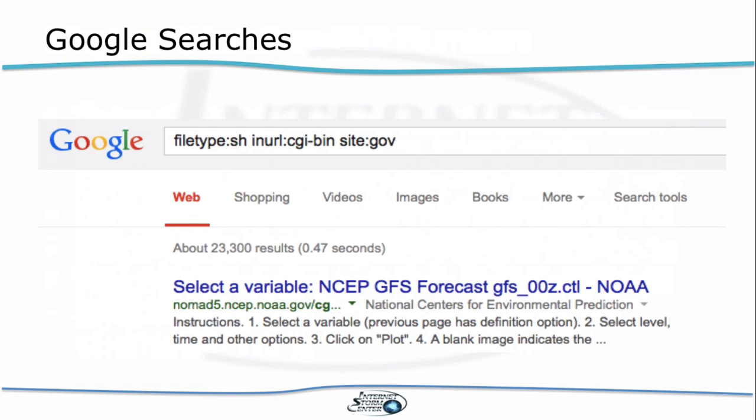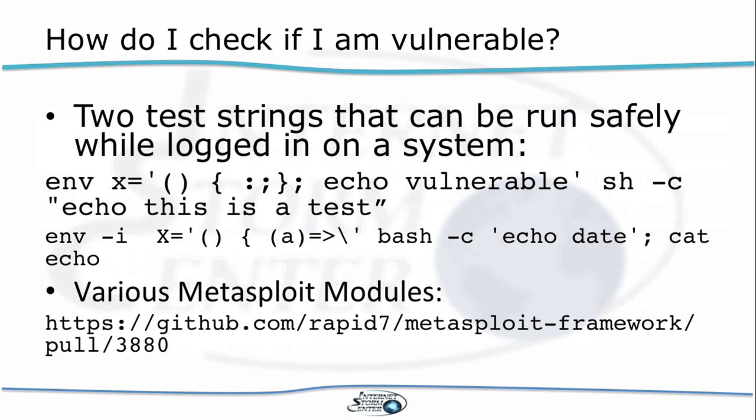So how do you find vulnerable systems? What I would do first — and maybe you can do this while listening to this webcast — is a Google search on your own domain. Check if Google finds any potentially vulnerable sites. This is very incomplete and you'll get false positives because not all CGI-bin URLs and not all files ending with .sh necessarily use Bash, but it gives you the low-hanging fruit. This particular Google search string has been quoted many times, so this is what attackers will try first to find vulnerable systems in your network.